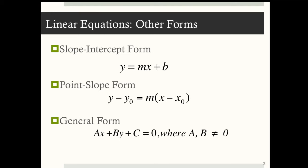And then you may have a general form, which is ax plus by plus c equals 0, where a, b, and c are all constants, with a and b not equal to 0.